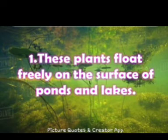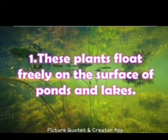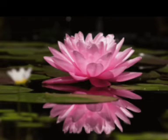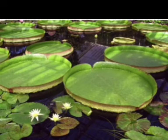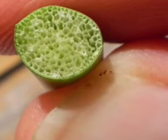These plants float freely on the surface of ponds and lakes. Float means to stay on the surface of any liquid. They usually have spongy bodies that are filled with air. Spongy means they have sponge-like tissues, which helps them to float and perform photosynthesis too.